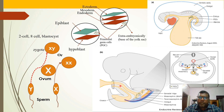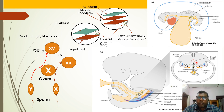We have the primordial germ cells here, and if you take a cross-section of this part you can see — in the cross-section of the fetus — these are the primordial germ cells. They have to move toward the gonadal ridge. This gonadal ridge is going to become a testis or an ovary depending on SRY factor expression, and they form the gonad.